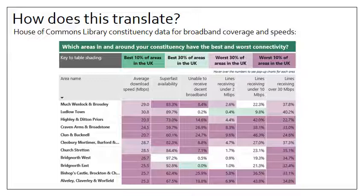You can see here constituency data for Shropshire, and it's not looking so good relative to other areas of the UK. There are a number of dark purple cells, and that puts those areas in the worst 10% of areas in the UK in terms of their connectivity.